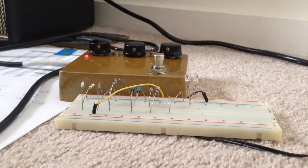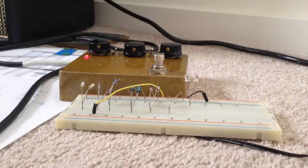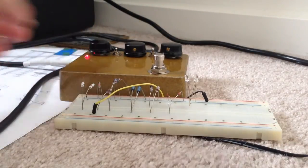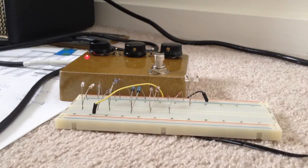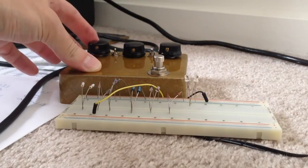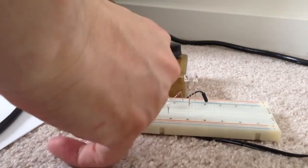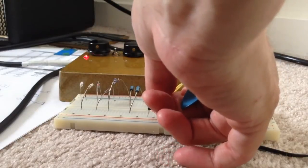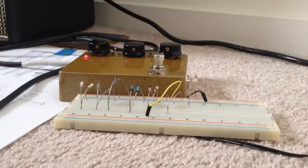I want to switch back to the 1N270s for a sec, just to compare. Gain at noon, these seem a lot smoother. Even at nine o'clock, they sound pretty smooth. And then I want to just really quick compare them back to the 1N34As, which I said are probably what's in the Klon.